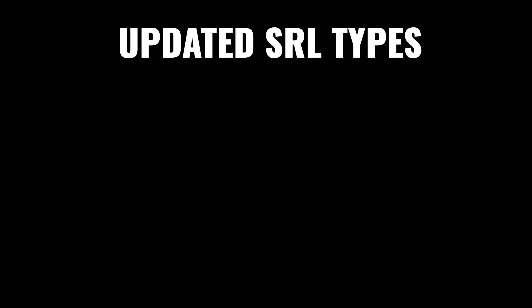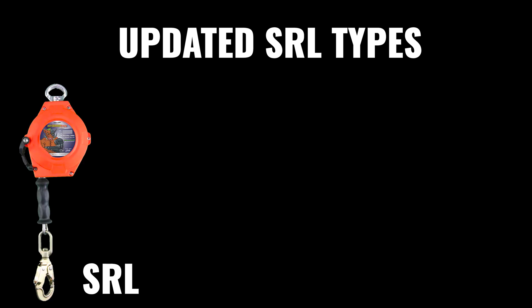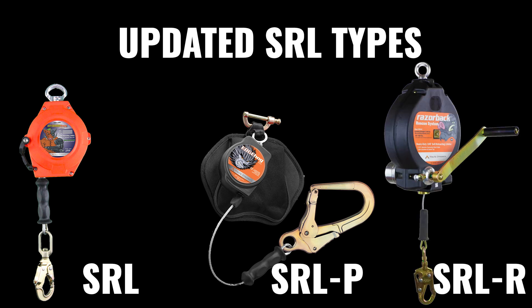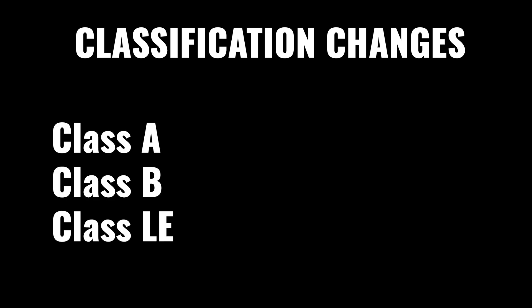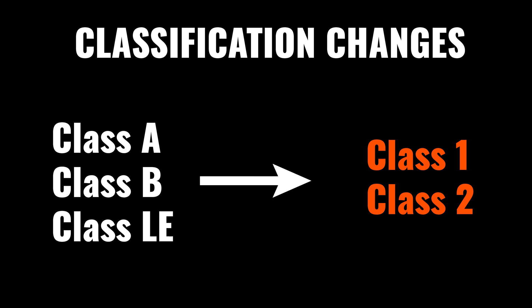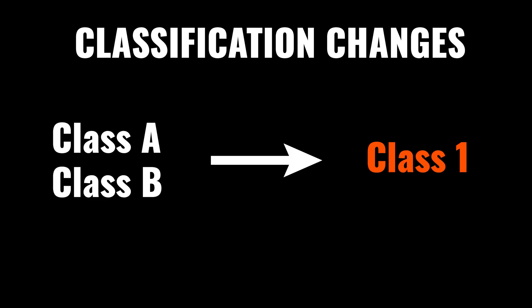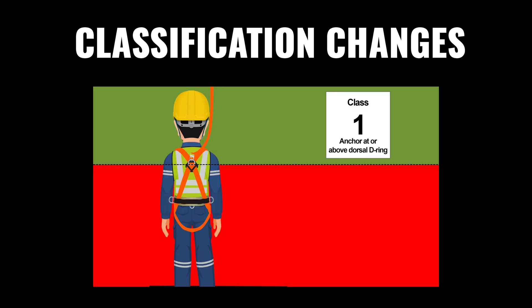Second, the classification and types of lifelines have changed wording. What we're used to seeing — Class A, Class B, Class LE — are all changing. They're moving to the new SRL types: SRL, SRL-P for personal, and SRL-R for rescue devices. The classification changes are Class 1 and Class 2, with Class A, Class B, and Class LE now removed. Class 1 replaces all Class A and Class B lifelines — these are your overhead-only lifelines, and the language is now 'at or above your D-ring.'